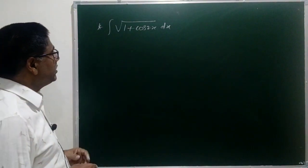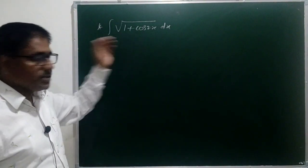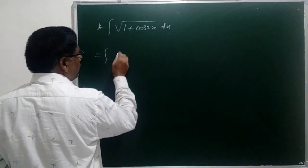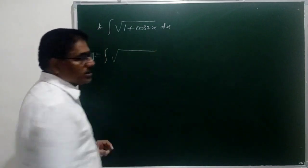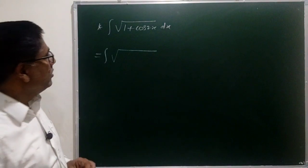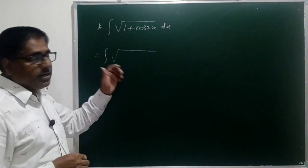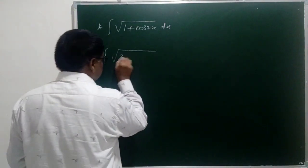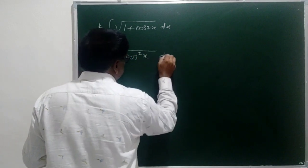To solve this problem let us simplify this function first. This can be written as integral of square root of 1 plus cos 2 theta is equal to 2 cos square theta. 2 cos square theta means 2 cos square x dx.